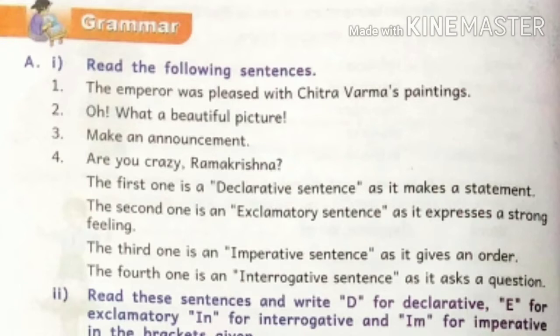Number three: 'Make an announcement' — this is an order or request, making it an imperative sentence. Number four: 'Are you crazy, Ramakrishna?' This is an interrogative sentence, as it asks a question.